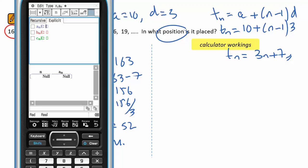I can then enter the equation 3n plus 7.